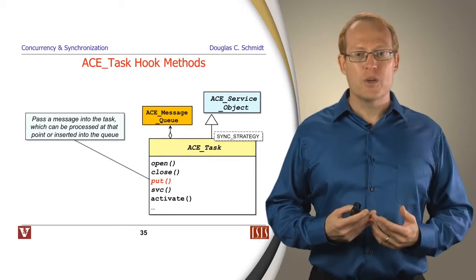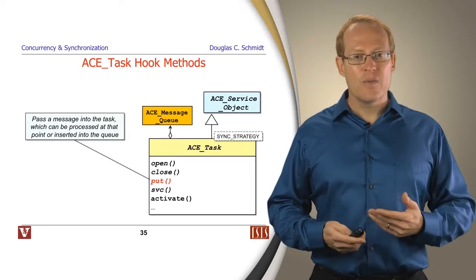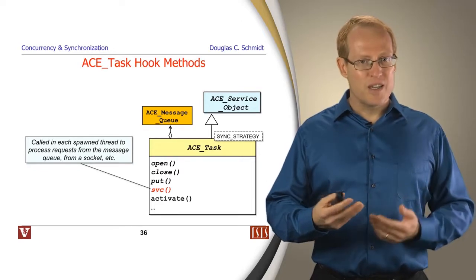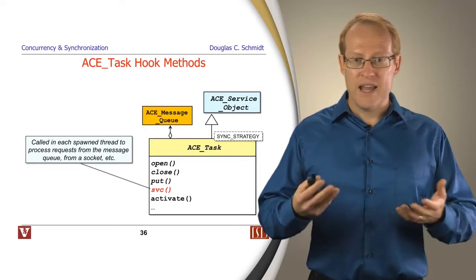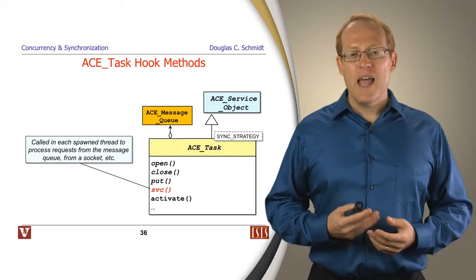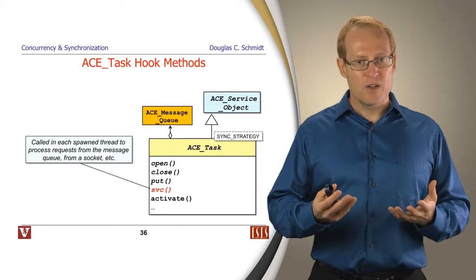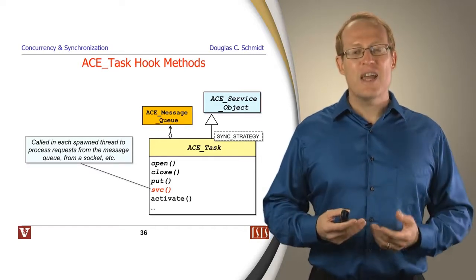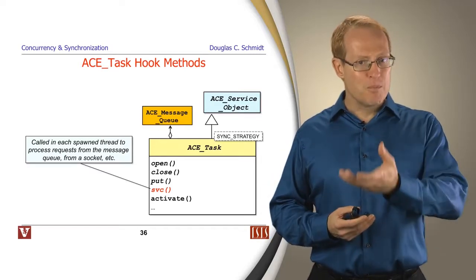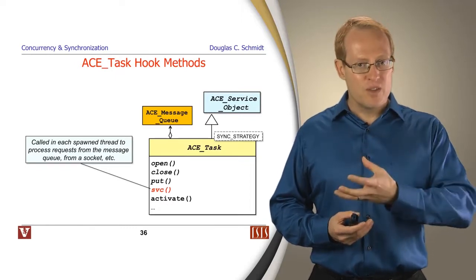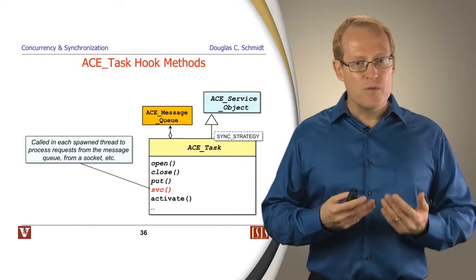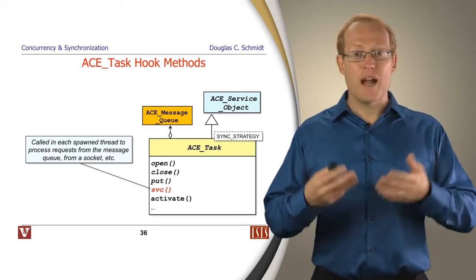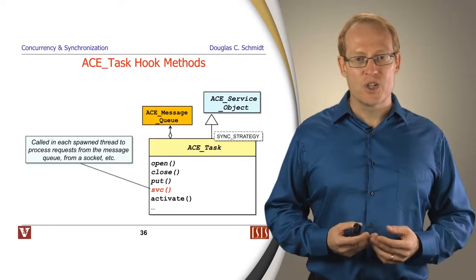Or it might choose to enqueue the work and then run it later in its service method. The service method typically runs in one or more threads of control that execute in the background as part of the active object pattern. And these service method calls will wait for work to show up on the message queue, which is synchronized. And when work shows up, perhaps being put there by someone else, then the service hook method removes the message, figures out what the work request is, performs the work, and then perhaps goes back to waiting for the next message to show up on the message queue.